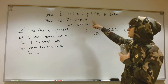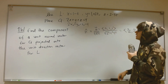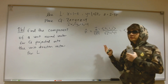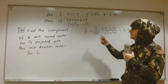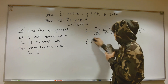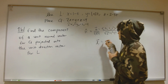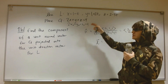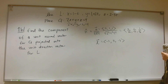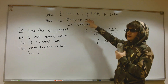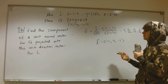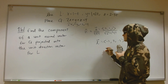Now I want the unit direction vector for L. You could find two points on L and subtract them, or note that the direction vector is simply the time derivative of L's parametrization — that is, the coefficients of t. So the direction vector is immediately (-1, 2, -3). You could verify this by plugging in two values of t and subtracting, but reading off the coefficients of t is faster.